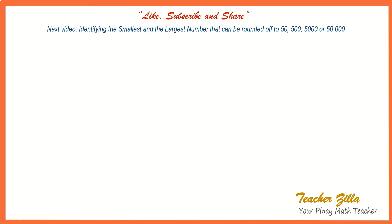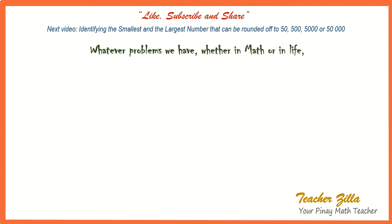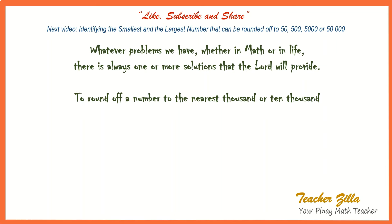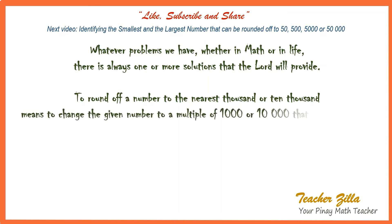Thank you for watching. Whatever problems we have, whether in math or in life, there is always one or more solutions that the Lord will provide. To round off a number to the nearest thousand or ten thousand means to change the given number to a multiple of one thousand or ten thousand that is nearest to it.